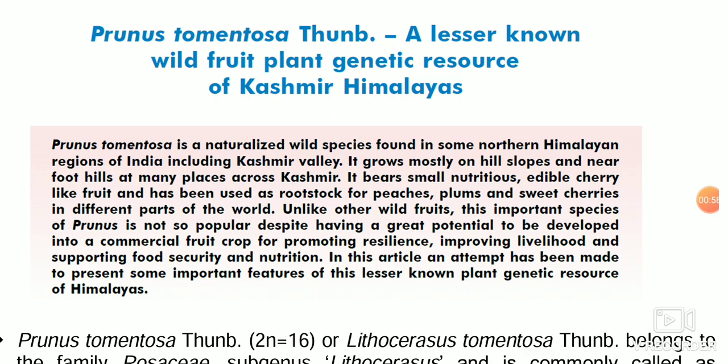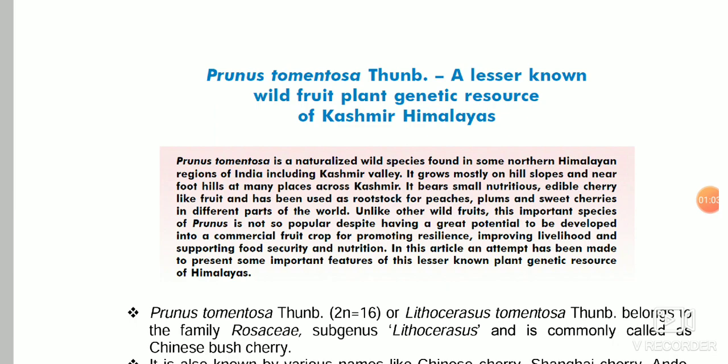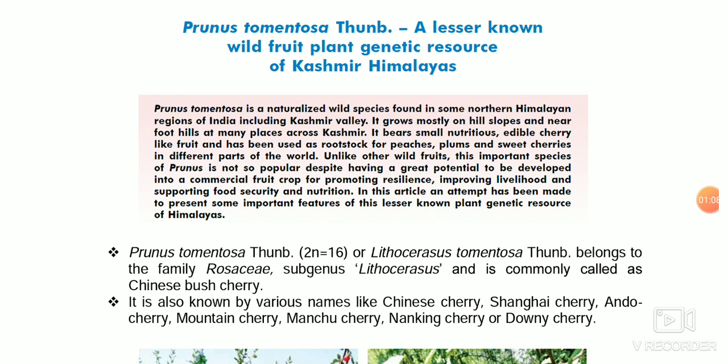This is a genetic resource of the Kashmir Himalayan region — Prunus tomentosa. The important points to remember are the scientific name and common name, that is Chinese bush cherry. It bears small, nutritious, edible cherries and is commonly used as a rootstock for peach, plum, and sweet cherry in different parts of the world.